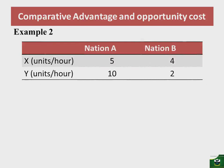Let's take a look at another example. Suppose nation A produces 5 units of commodity X and 10 units of commodity Y per hour, while nation B produces 4 units of commodity X and 2 units of commodity Y per hour. Clearly, nation A has an absolute advantage in producing both commodity X and commodity Y.